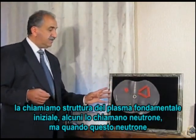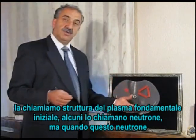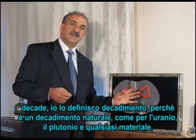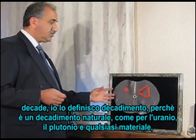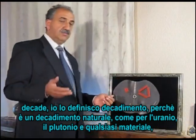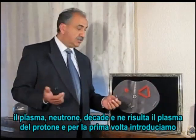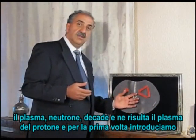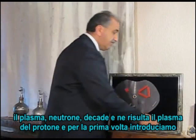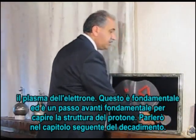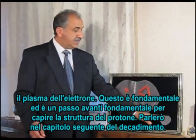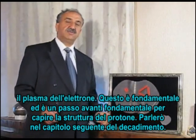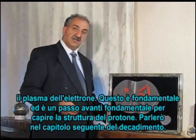This we call the structure of initial fundamental plasma. Some people call it neutrons. When this neutron decays — and I call it a decay because it's a natural fundamental decay, like uranium, plutonium, and everything else when they decay — the plasma of the neutron decays and the outcome is the plasma of the proton. For the first time, we also introduce the plasma of the electron. That is a very fundamental and major breakthrough to understand the structure of the proton. We'll speak about the decay in the following chapter.